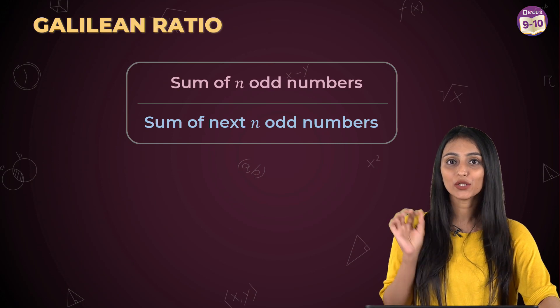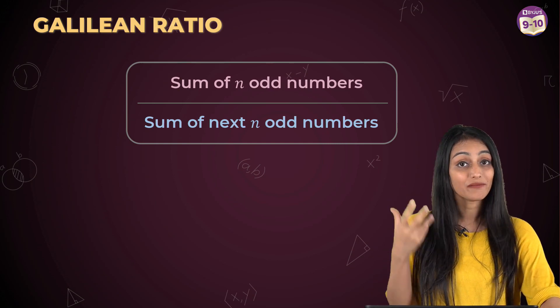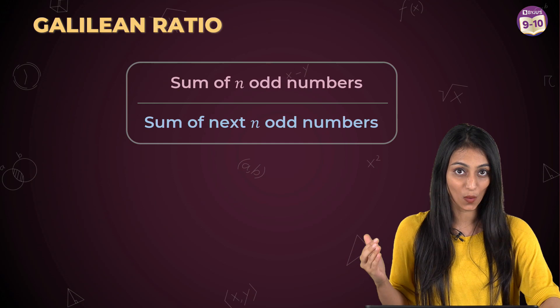But remember one thing, you cannot use any random odd numbers. When we are saying sum of n odd numbers, it has to be in a proper order.